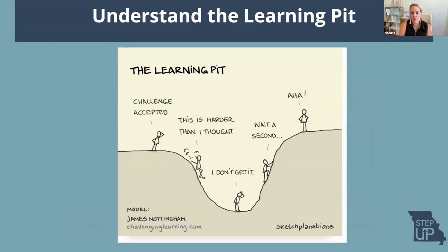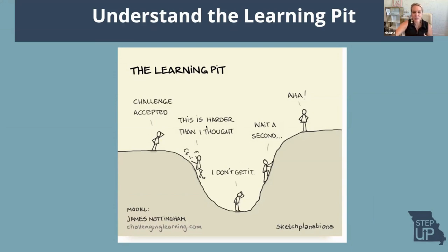It's also important to understand that student clarity includes helping them understand this idea of the learning pit — a model by James Nottingham. Students have to have a skill set of understanding what learning takes. Not only do I need to know the targets, I need to understand that you're going to hit a point where learning is harder than you thought and you're going to be in the pit. You're going to think, 'I'm not smart,' which is what American kids' NAEP results show we do all the time — unlike some of our counterparts, we give up. 'I'm either born smart or I'm not.'